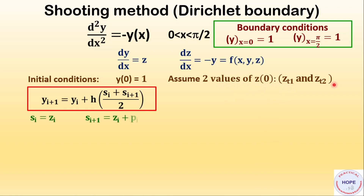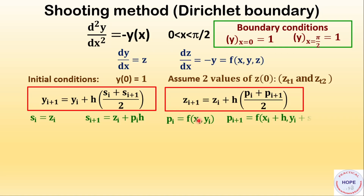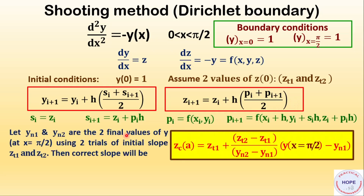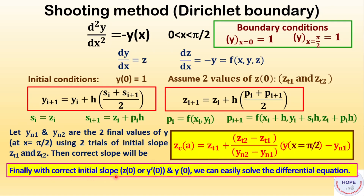We can calculate different values of y using the RK2 expression. s_i and s_{i+1} are given by these expressions, and similarly we evaluate different values of z. Now let yn1 and yn2 be the two final values of y at x equal to π/2 using two trials of initial slope zt1 and zt2. The correct slope is then zca. Finally, with the correct initial slope and y0, we can easily solve the differential equation.